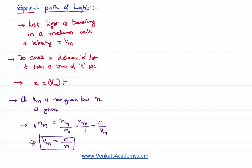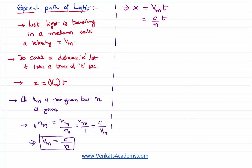I have explained this in the previous video lesson as well. Taking that into consideration, I can now write the distance travelled by light in that medium as: instead of the velocity of light in the medium, I write c divided by the refractive index n, multiplied by t. So x equals c times t divided by n.